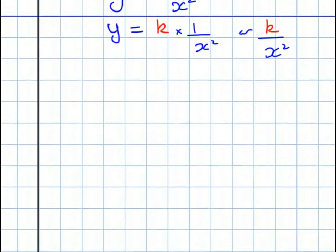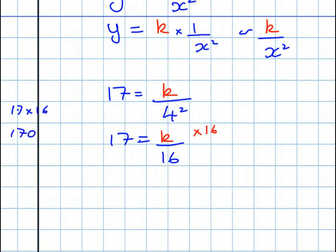So we're going to replace Y with 17 and X with 4. 17 is equal to K over 4 squared. It's a bit of arithmetic. 17 is equal to K over 4 squared is 16. Now, I'm going to multiply the whole equation by 16. To give me 17 times 16. 10 times 17 is 170. 6 times 17 is 102. So it's going to be 202. That's 17 times 16.